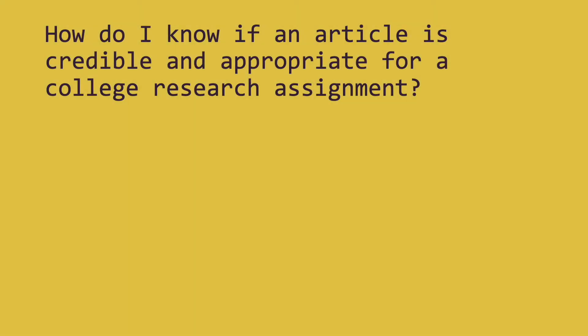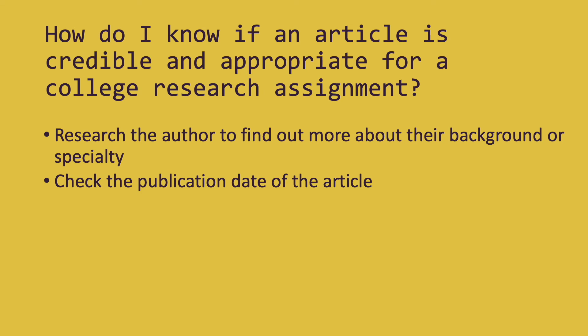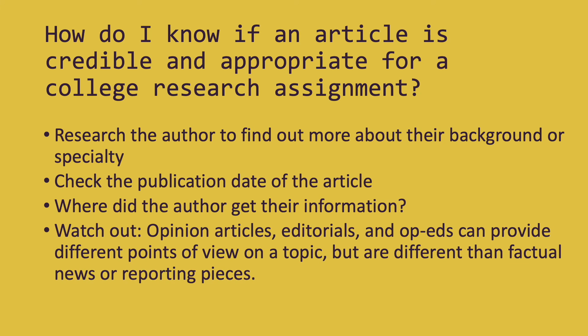Now that we've looked at how to find articles, let's talk about how you'll know if the article is credible and appropriate for college research. Just like with the books, you can research the author to find out more about their background or specialty — you might even find they have social media accounts and see what kinds of things the author posts. You can check the publication date of the article, which is really important if it's current events or you need the latest research or reporting. Again, look at where the author got their information — references, studies, or sources of data. And watch out for opinion articles, editorials, and op-eds. These can provide points of view on a topic, but they're different than a factual news piece because they reflect the author's opinion and may have a bias.